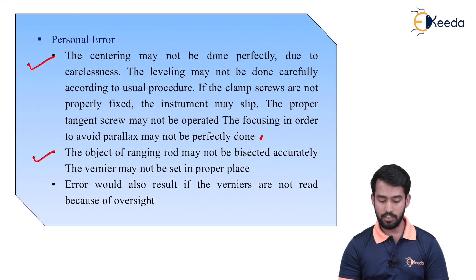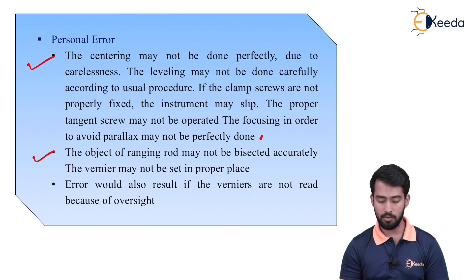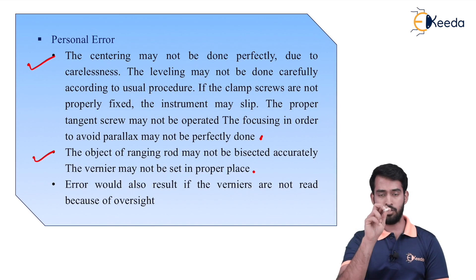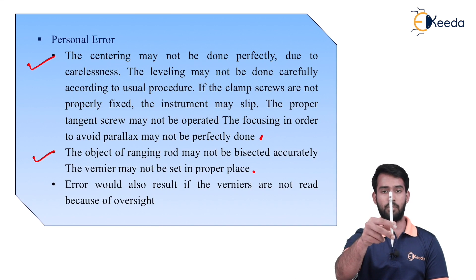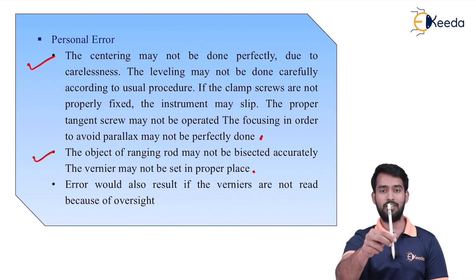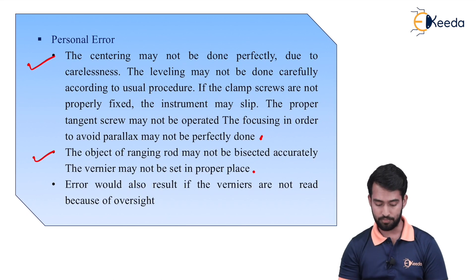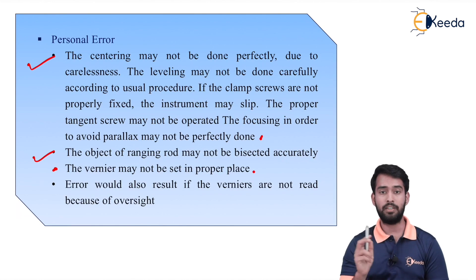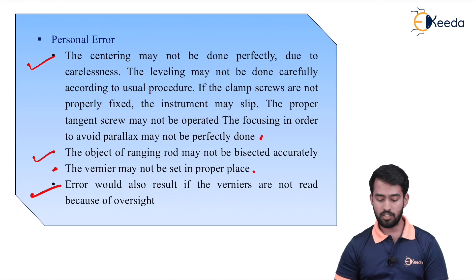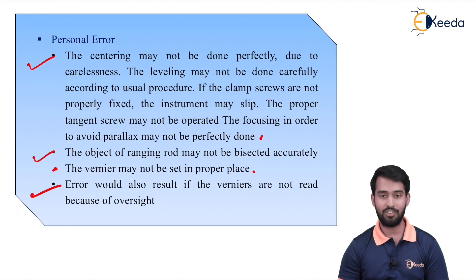Next, the object — the ranging rod — may not be bisected accurately, and the vernier may not be set in the proper place. When bisecting a ranging rod, we must bisect it at its base, because many times the ranging rod is not truly vertical and may be inclined. It is recommended to bisect the base of the ranging rod. We also need to set vernier A at 0 and B at 180; if not set properly, we will get a different angle. Error would also result if the verniers are not read carefully due to oversighting.